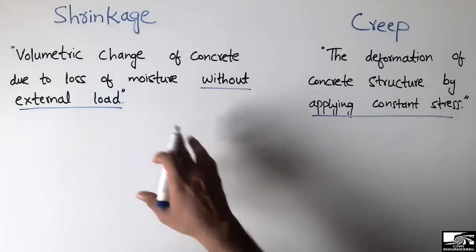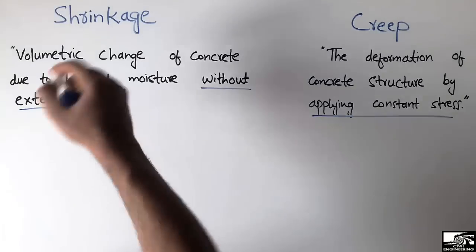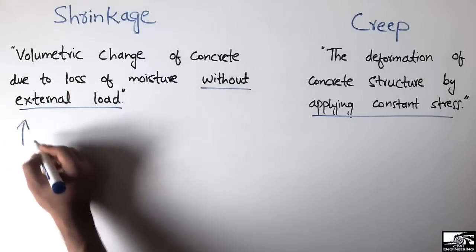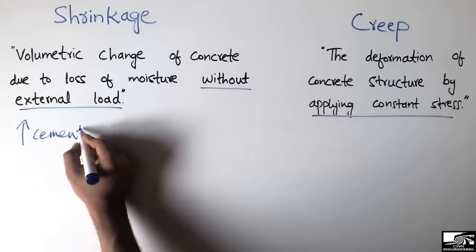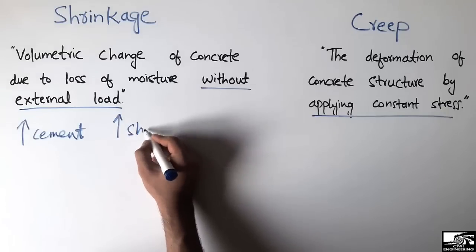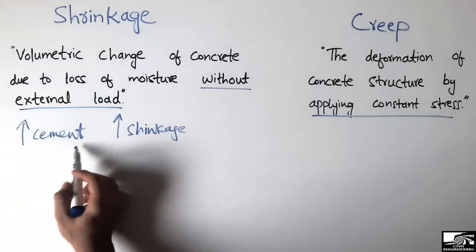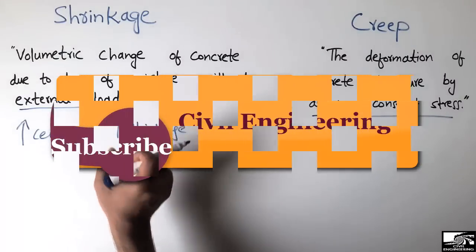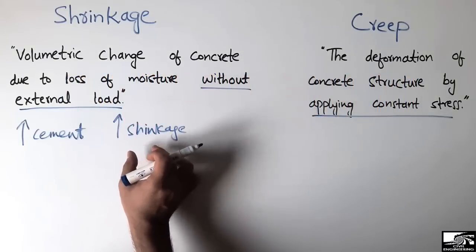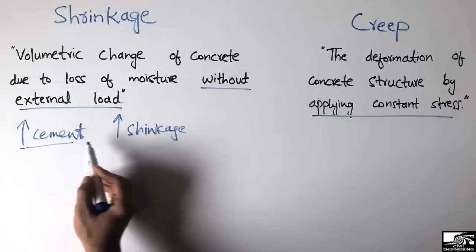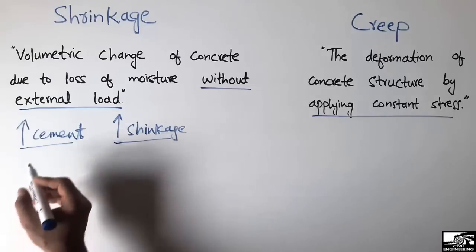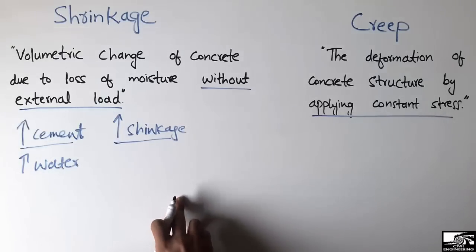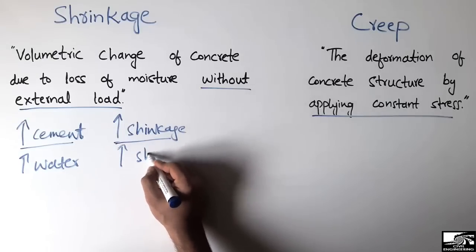There are some factors which affect these two types of deformation. First, if we increase the cement content in concrete, shrinkage is going to increase, because the hydration rate inside the concrete increases, leading to more moisture loss and therefore more shrinkage. Second, if we increase the water content in a concrete member, shrinkage also increases with the addition of more water.